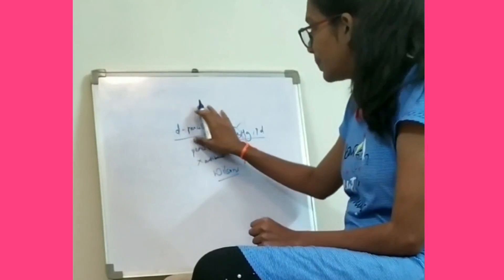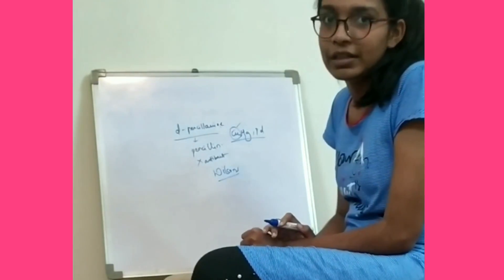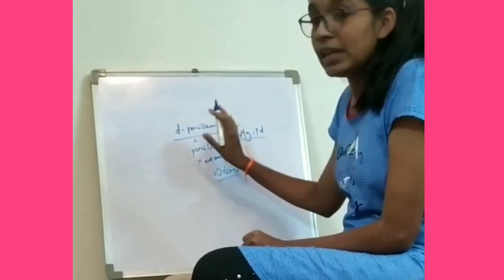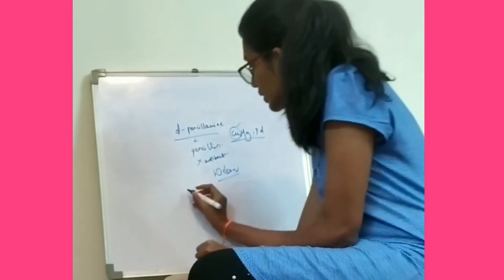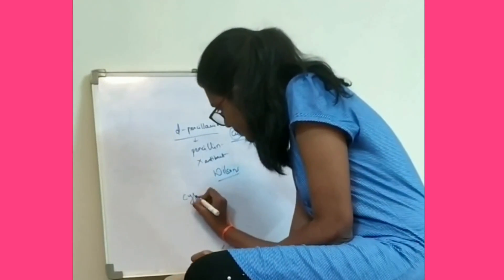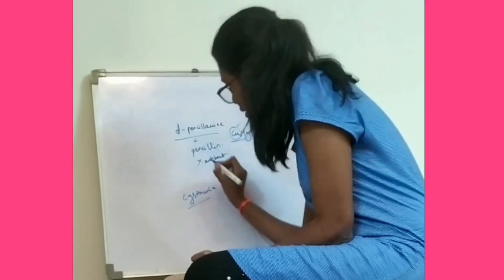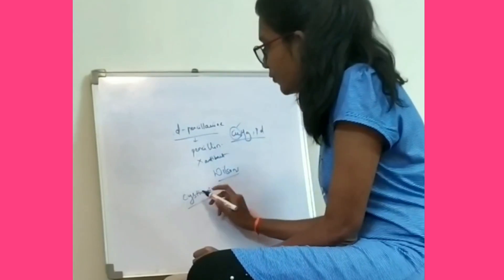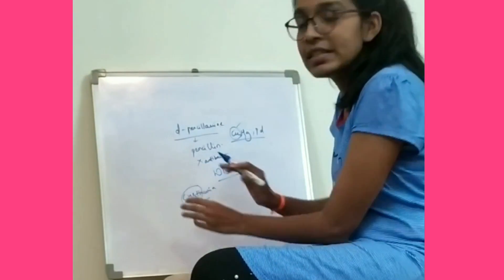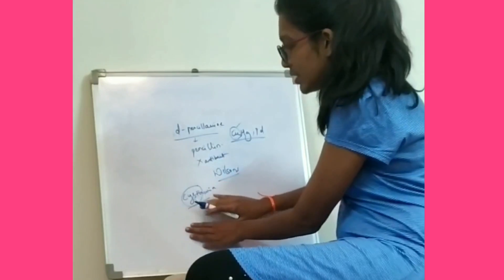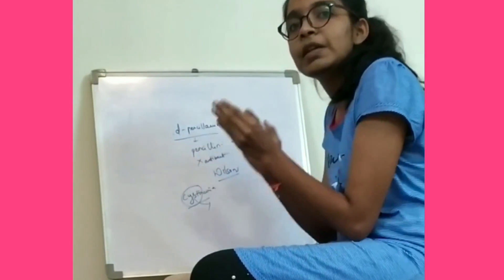We also use D-Penicillamine in rheumatoid arthritis. We can also use it in cystinuria. In cystinuria, D-Penicillamine forms complexes with cystine and removes it — that is, excess cystine — due to which cystinuria could be reduced.